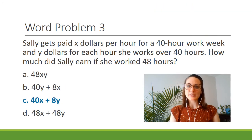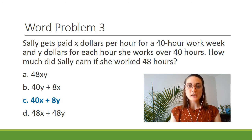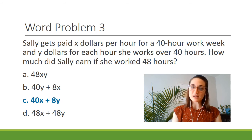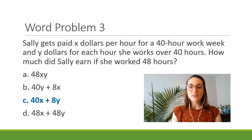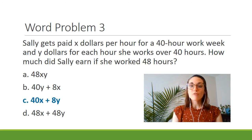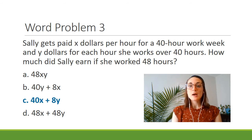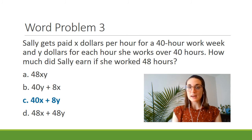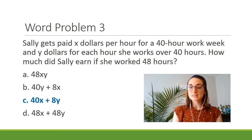Take a look at these multiple choice options. This is why it's so important to take apart the word problem first, solve it on your own, and then go back to the answers — rather than just picking what looks right first. You can see options like 48XY, 40Y plus 8X, and 48X plus 48Y. All of these might look right if you just glanced at the problem and took a quick guess. But because we took the time to really solve this for exactly what it asked, we were able to find the correct answer, which is C: 40X plus 8Y.